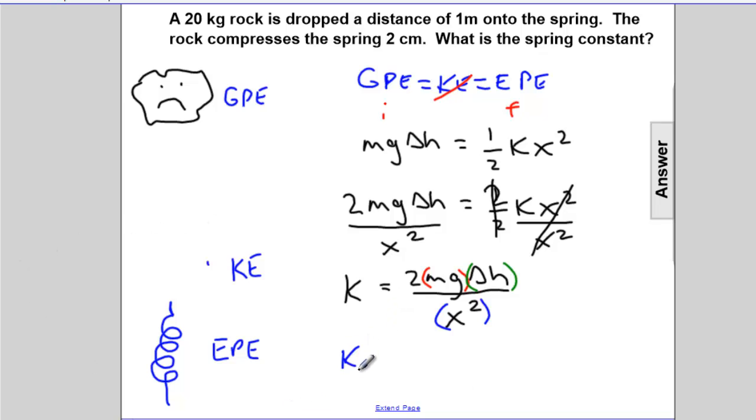We'll sub in. K will be equal to 2 times the mass, 20 kgs, times gravity, 9.8 meters per second squared, times H. How far did it fall? Be careful.